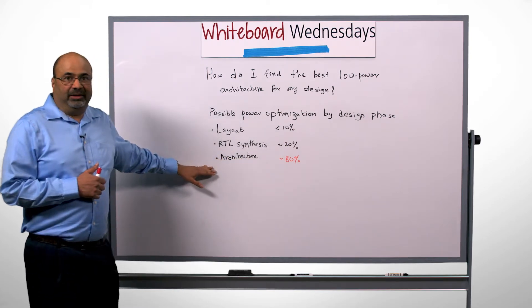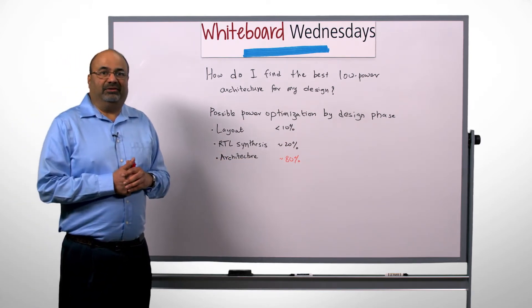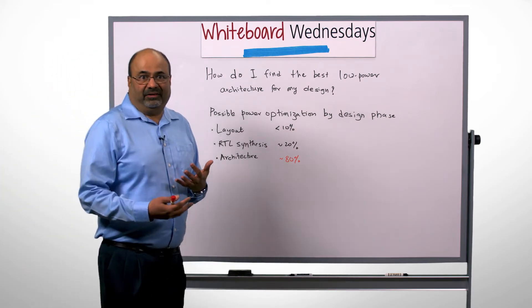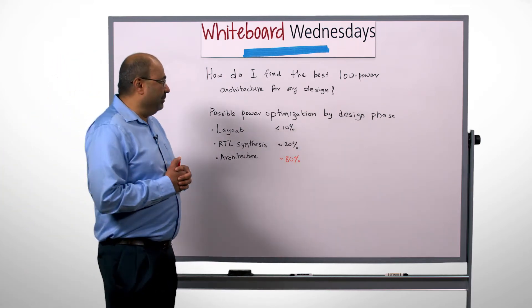And this is a problem in the traditional handwritten RTL flows because the architecture is decided very early and it's more or less a guess as to whether it's the best one for your application.